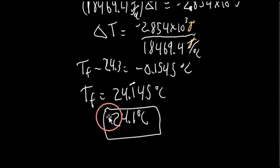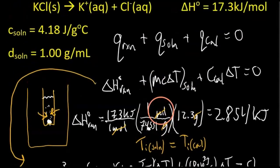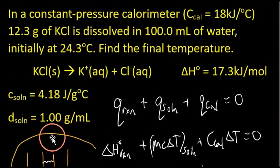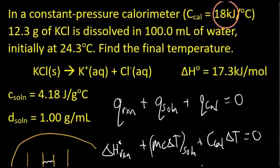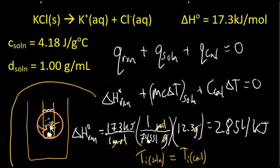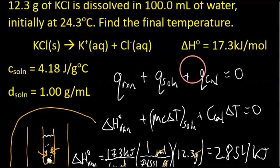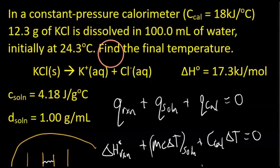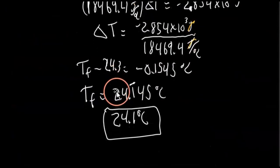Notice the initial temperature was 24.3 degrees Celsius and it only dropped by about 0.15 degrees — it doesn't drop very much. That's because this calorimeter has a very high heat capacity of 18 kilojoules per degree Celsius. It's absorbing all the energy transferred as heat and not allowing the temperature to drop much. This is actually a horrible calorimeter for this experiment — you can't measure much of a temperature change.